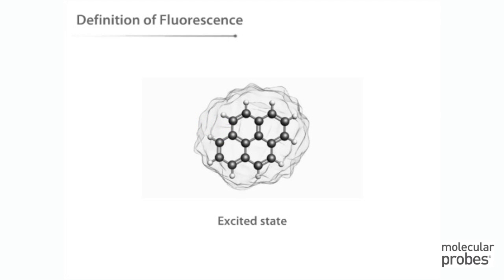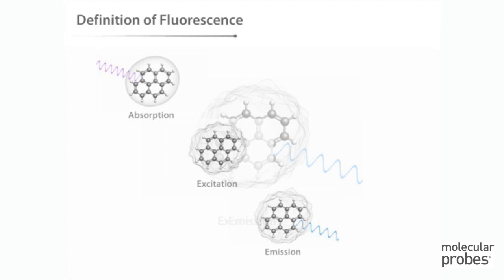The energy of the excited state, which cannot be sustained for long, decays or decreases, resulting in the emission of light energy. This process is called fluorescence. To fluoresce means to emit light via this process.